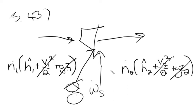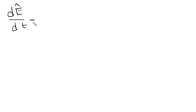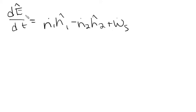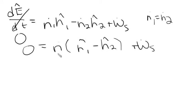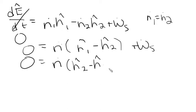We're solving for power, so we're solving for the shaft work term. Our open system energy balance is: dE/dt = N-dot-1·H-hat-1 − N-dot-2·H-hat-2 + shaft work. At steady state, dE/dt = 0, and N-dot-1 = N-dot-2, so we combine those terms. This gives 0 = N-dot(H-hat-1 − H-hat-2) + W_s, and flipping signs: 0 = N-dot(H-hat-2 − H-hat-1) − W_s.